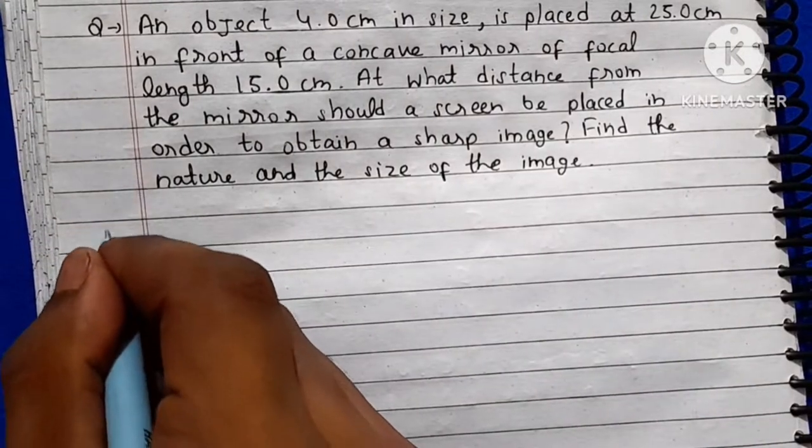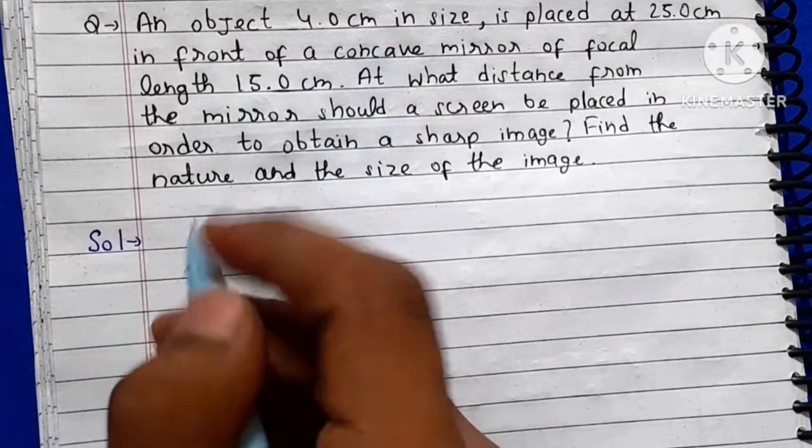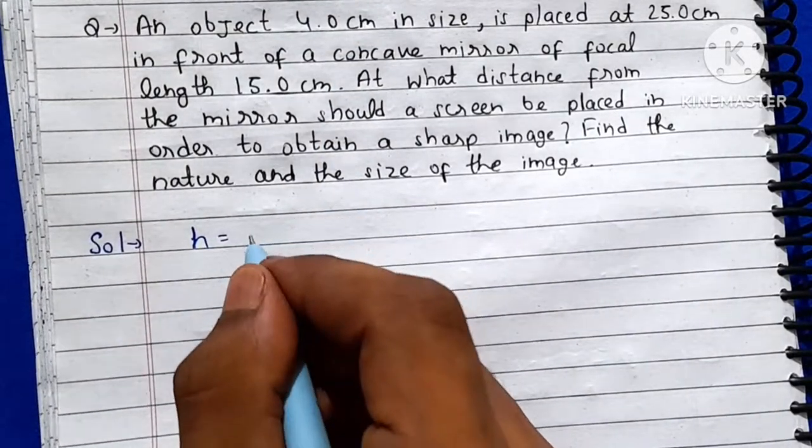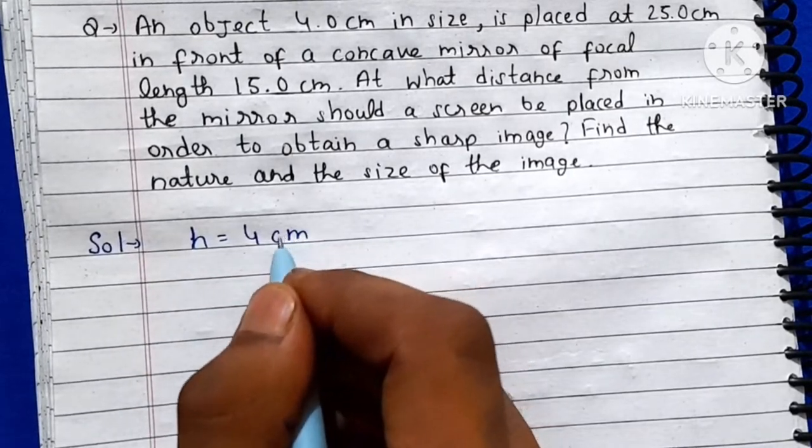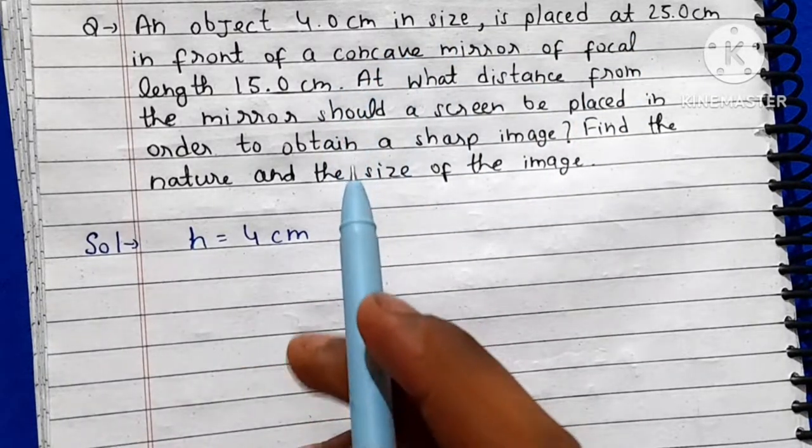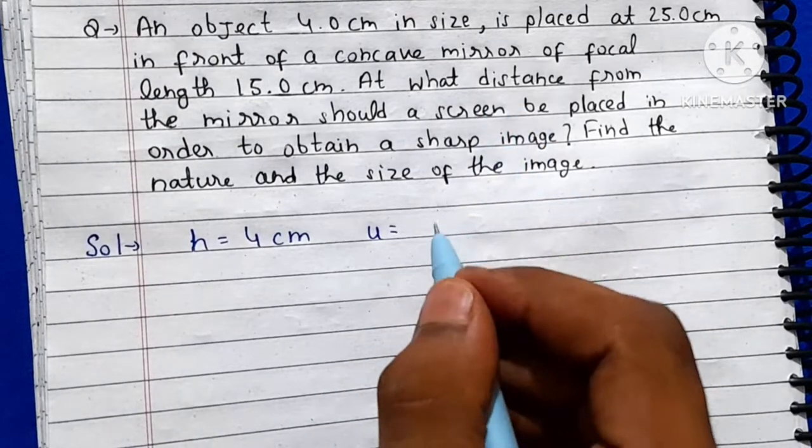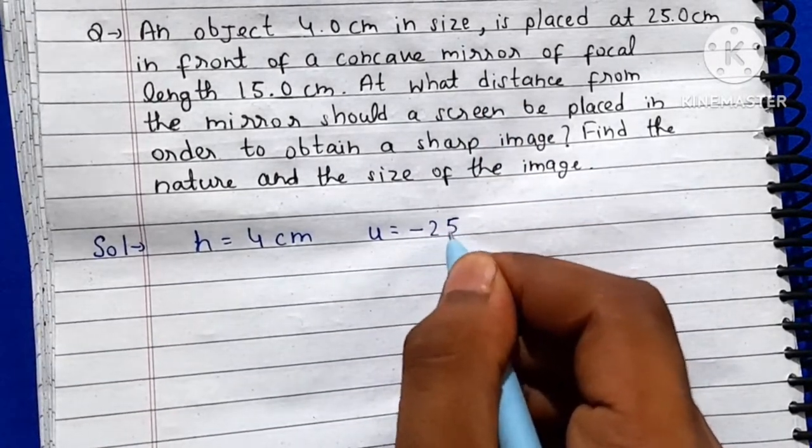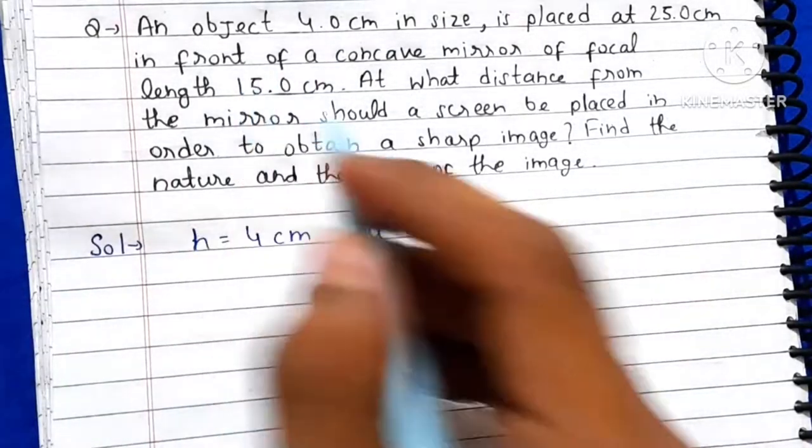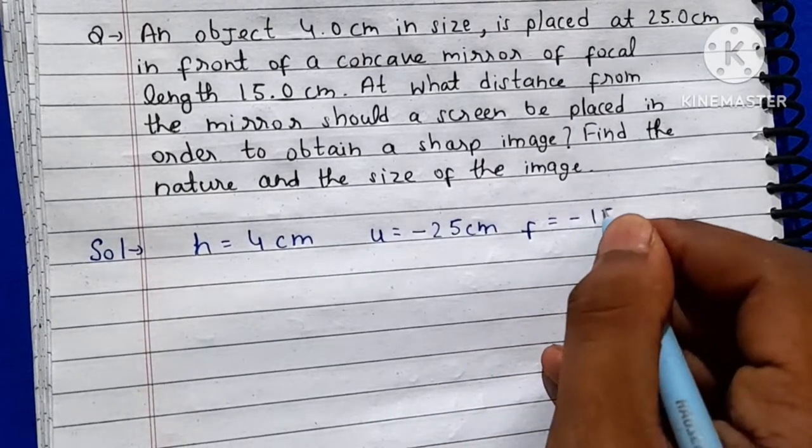Let's solve this. First of all, we will write what we have given. Object size is 4 cm, so we will denote it as h = 4 cm. It is placed at 25 cm in front of a concave mirror, so object distance u, and because this is a mirror, according to sign convention it will be negative, so u = -25 cm. Focal length of the mirror, so f = -15 cm.